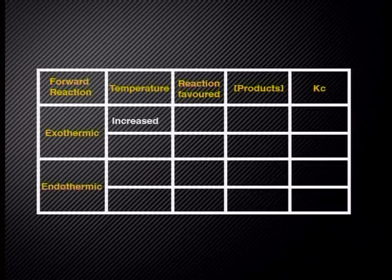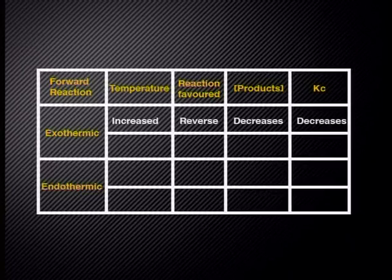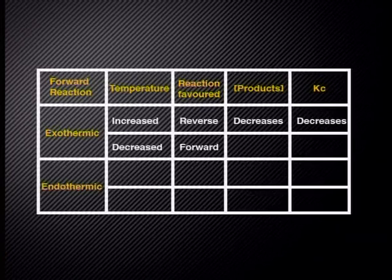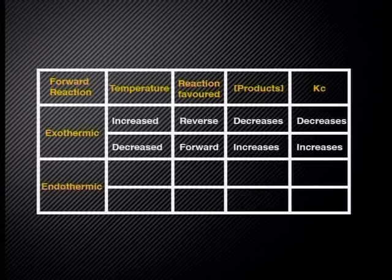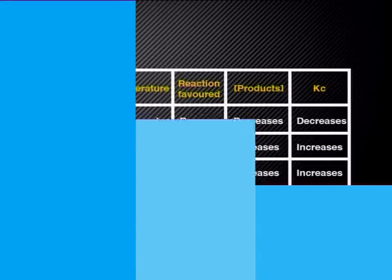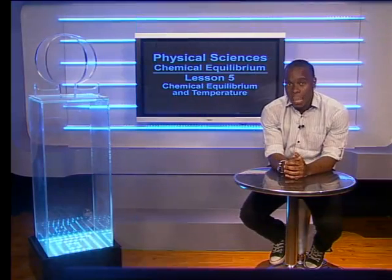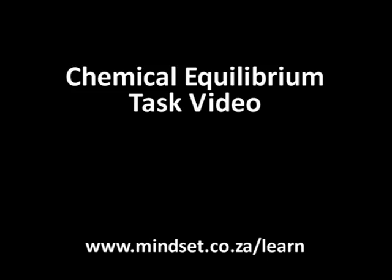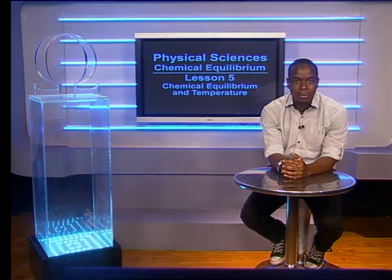Let's review what we have learned. If the forward reaction is exothermic and the temperature is increased, then the reverse reaction is favored — the concentration of products decreases and the Kc decreases. If the forward reaction is exothermic and the temperature is decreased, then the forward reaction is favored — the concentration of products increases and the Kc increases. The opposite is true if the forward reaction is endothermic. Have a look at the rates and chemical equilibrium task video, and you may find additional information on our website, www.mindset.co.za/learn. Goodbye.